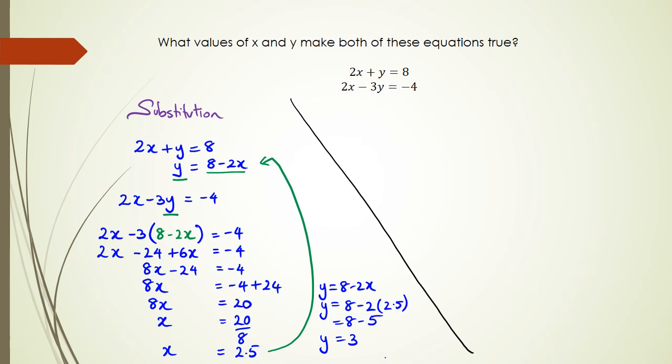So that is one way of doing it, which is substitution. The other way of doing it is elimination. With elimination, I write the two equations as they are, and I write the second equation just below it: 2x minus 3y equals negative 4.